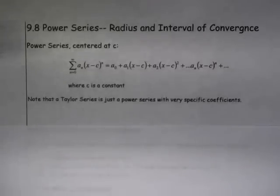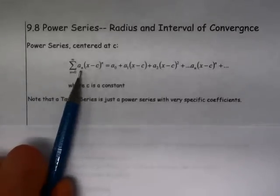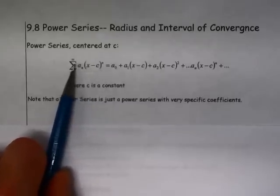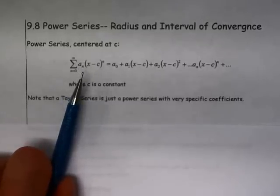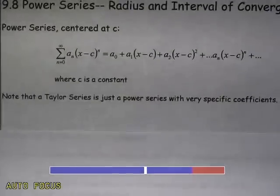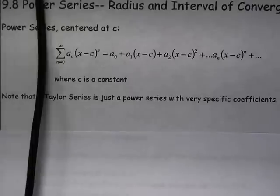But right now, we're going to keep it really generic. We're going to say a power series is a series that has terms that have some kind of coefficient. That's what this a sub n is, just some coefficient. And then it's going to have x minus c to the n factors in each of the terms.